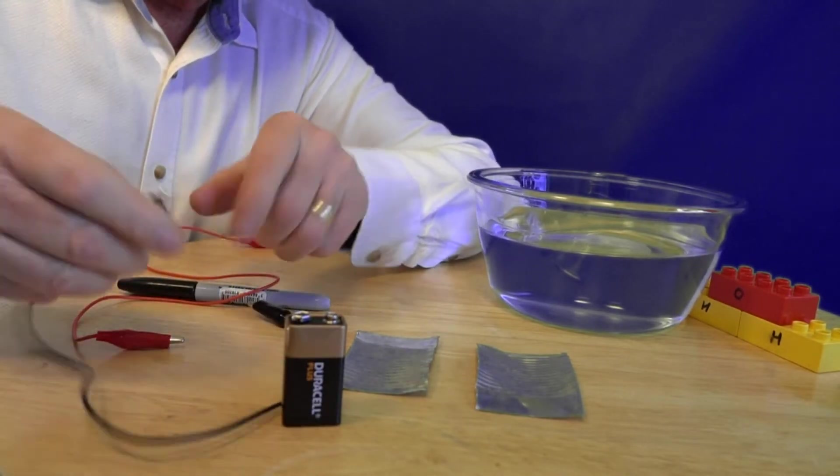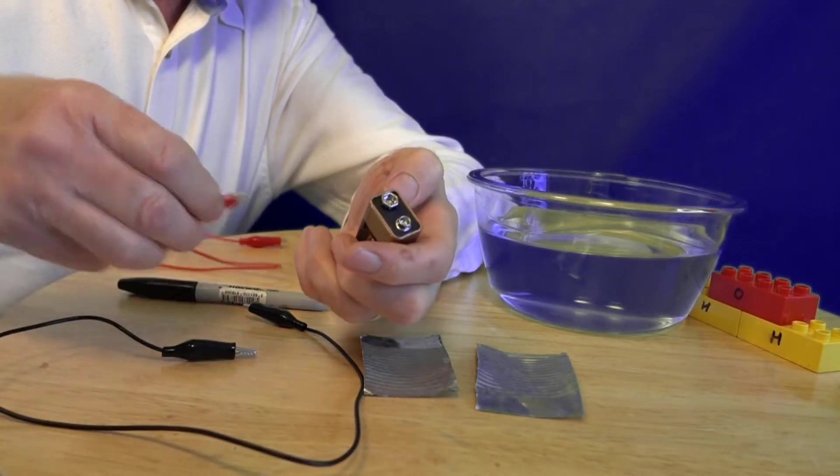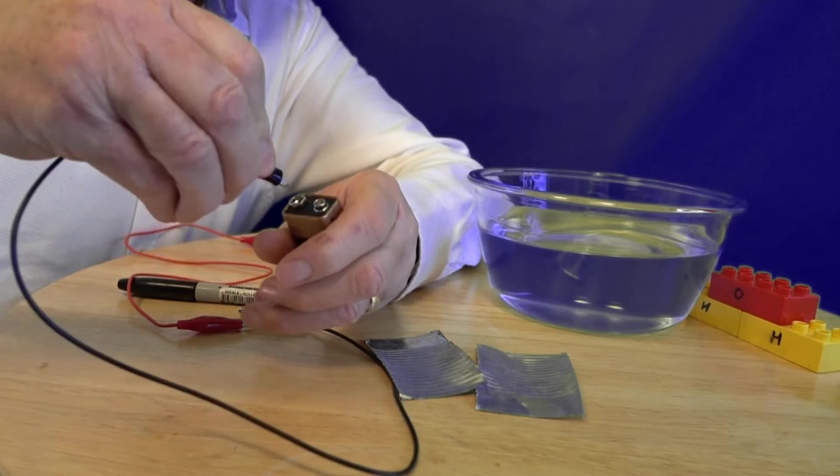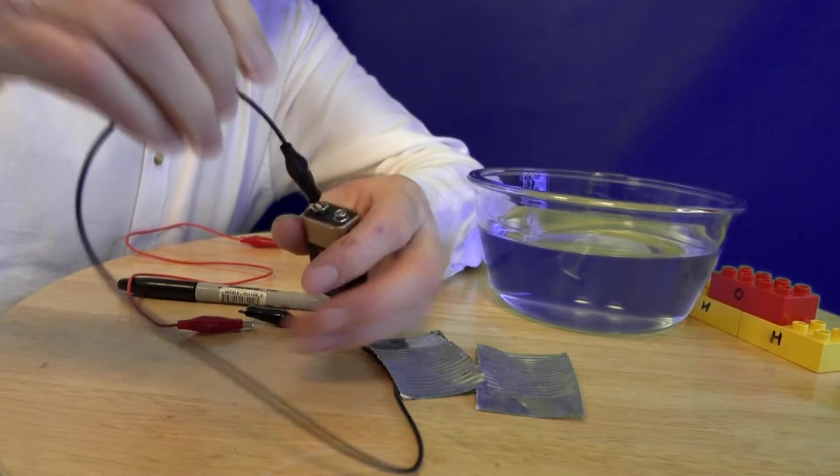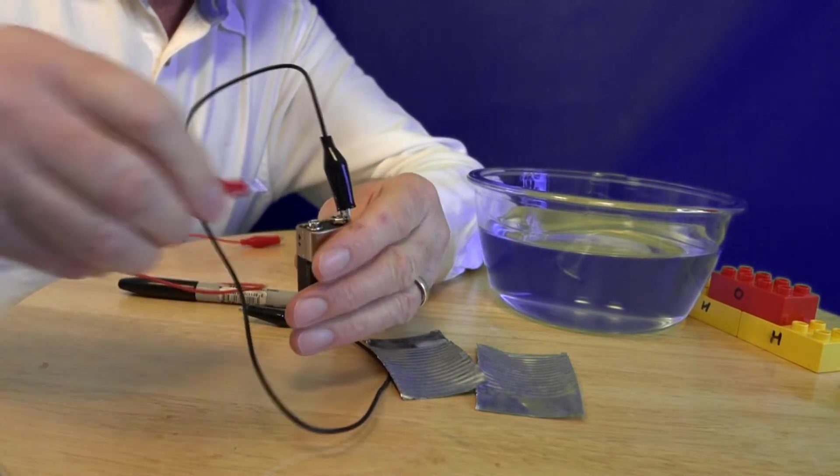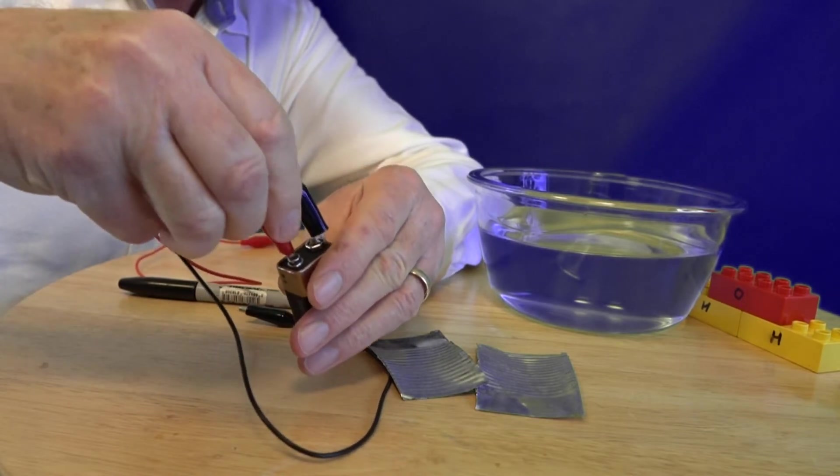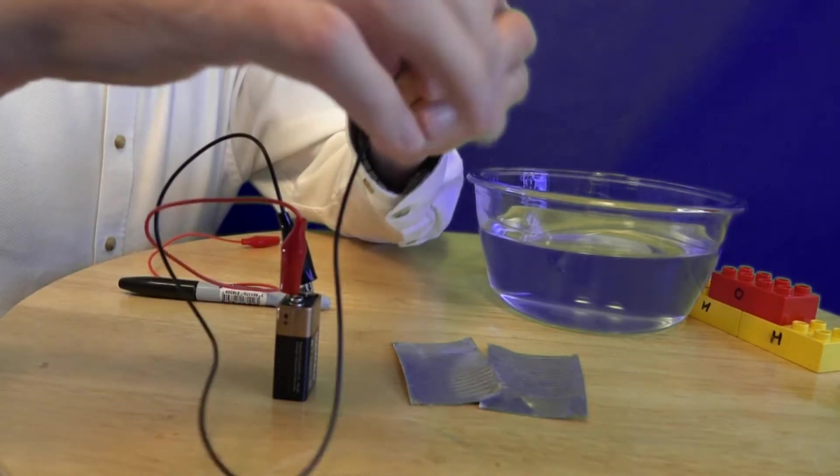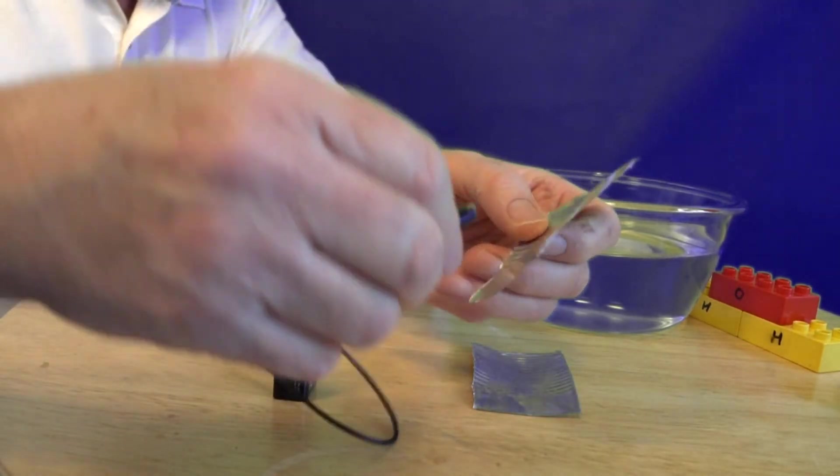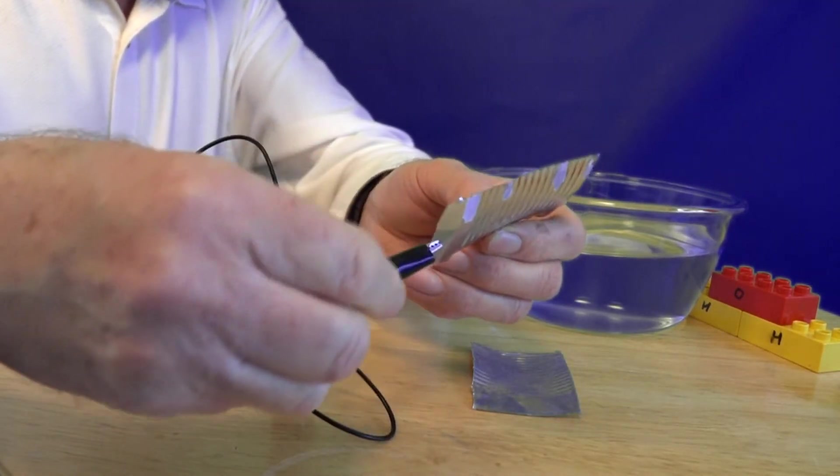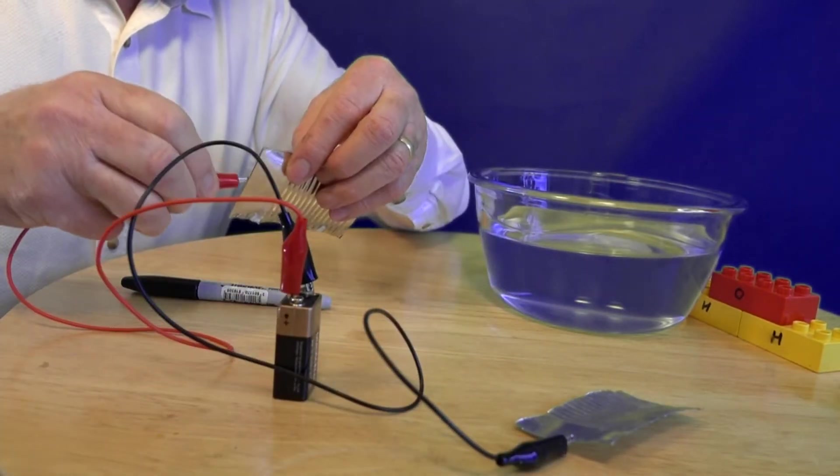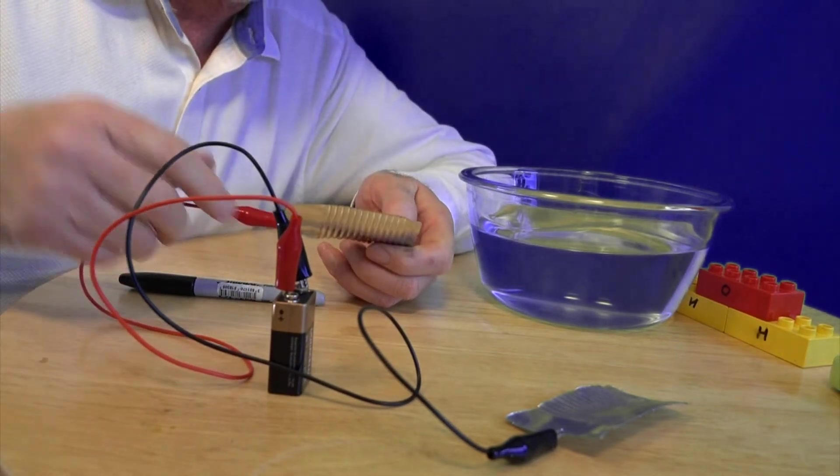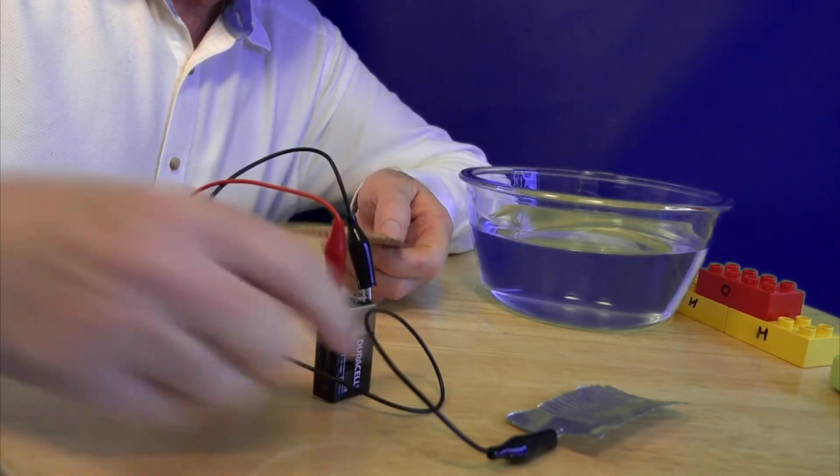And what I've got are two leads here. So I'm going to connect my black lead to the minus terminal and I'm going to connect my red lead to the plus terminal. And then I'm going to attach my cables to these bits of tin like that.